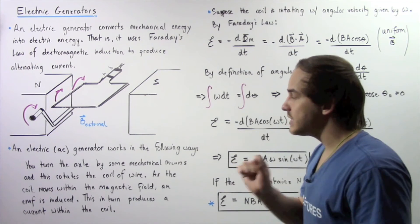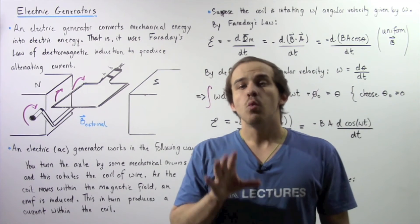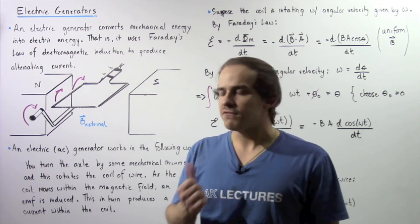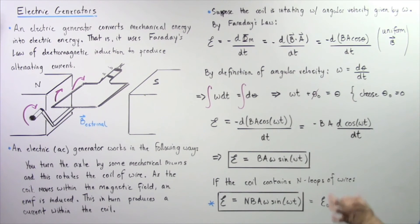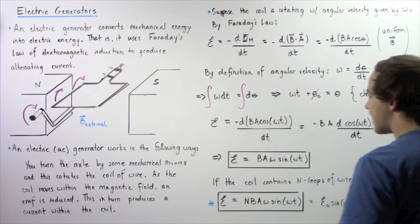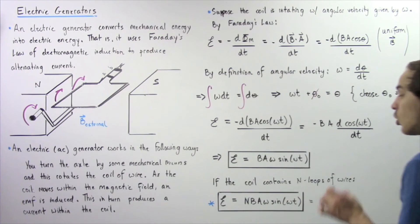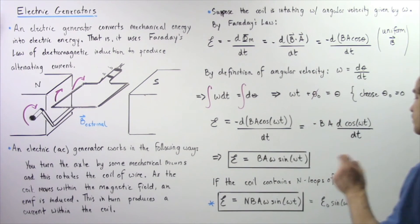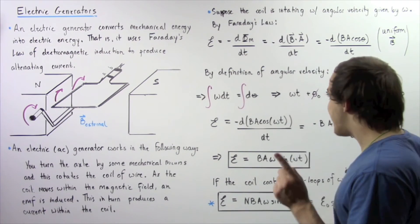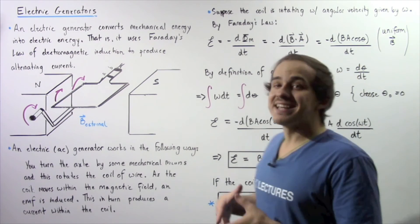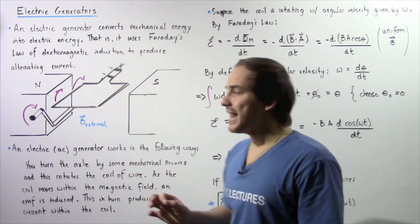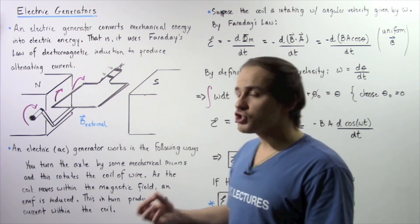This equation gives the induced EMF for a single loop of wire. If the coil contains N loops of conducting wire, we simply multiply the right side by N, giving: induced EMF = N·B·A·ω·sin(ωt). Our induced EMF still depends on time sinusoidally, and that is exactly why this produces an alternating electric current.